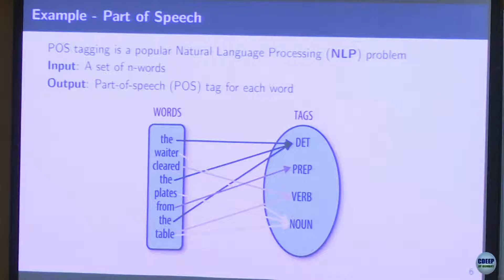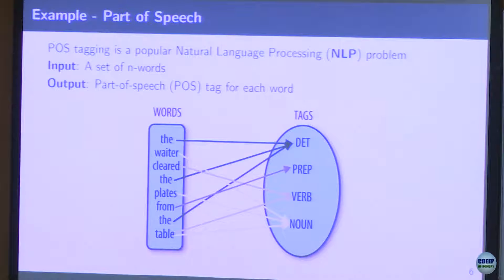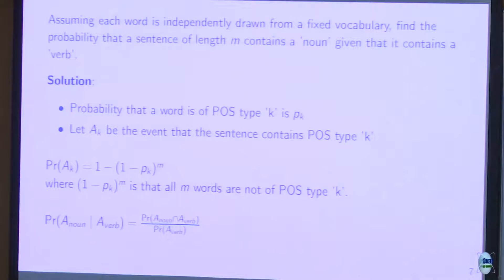Another example: parts of speech. Generally in a sentence, each word can be categorized as a verb, noun, or preposition — that is the part of speech. Assume that for each word the part of speech is independent. Given a set of m words, assume each word is independently drawn from a fixed vocabulary.